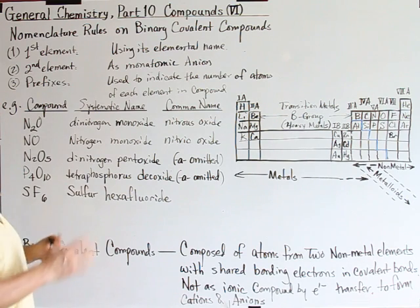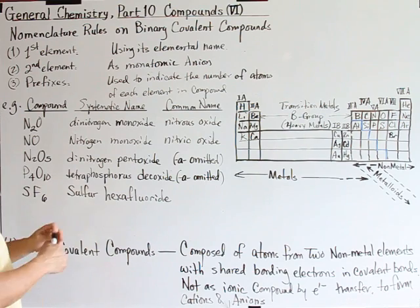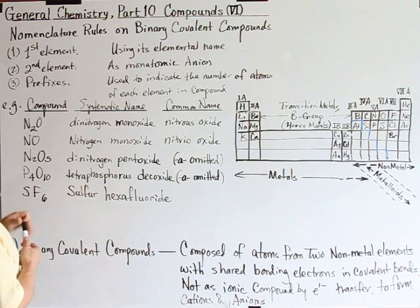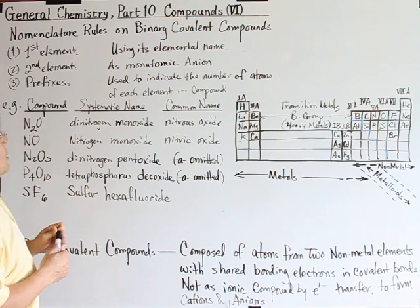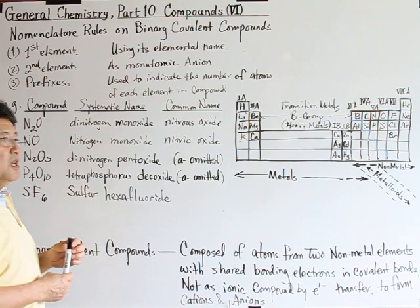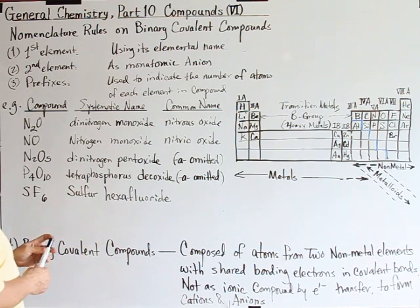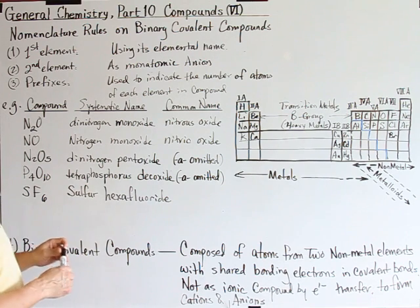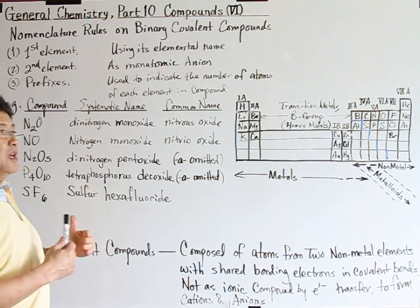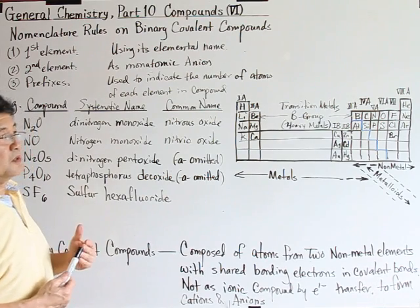The nomenclature rules on binary covalent bonding compounds have three rules. First, we write the element on the left, always using its elemental name. And then the second element, we always name them as an anion, in monoatomic anion, the case we did in the binary ionic compounds. Because the difference between naming ionic and covalent, we adopt the prefix system.